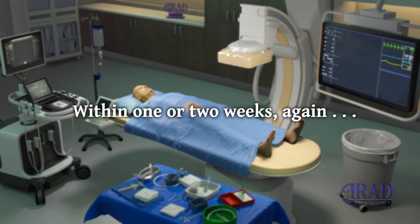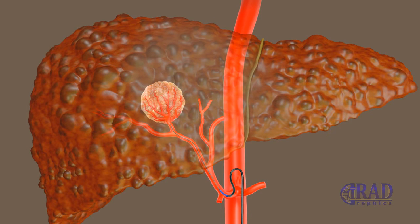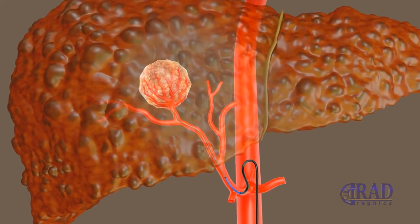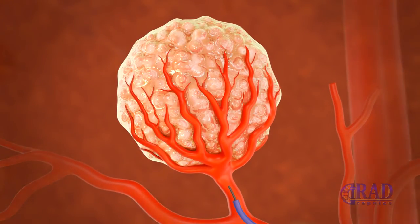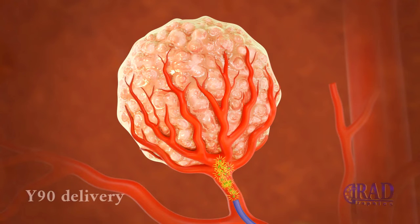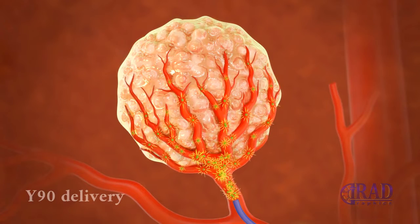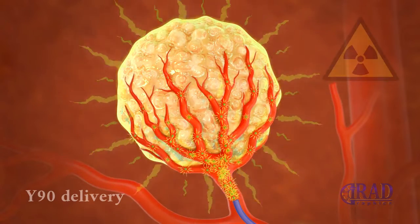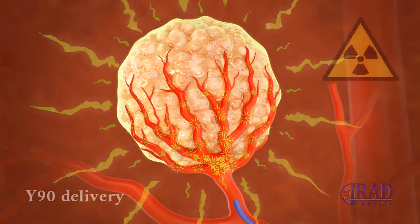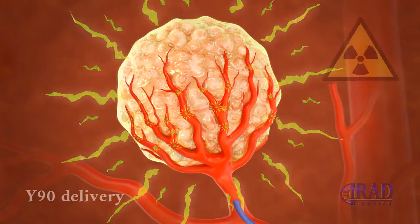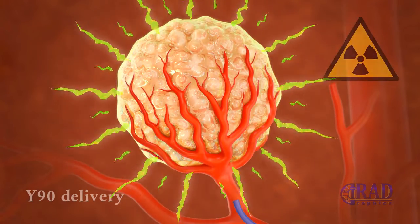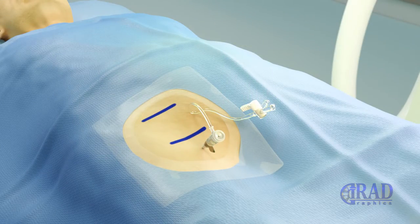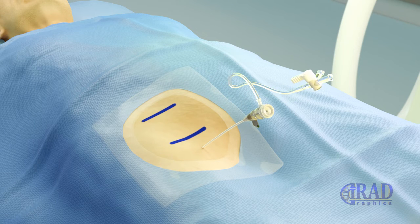Upon the patient's return for radioembolization, access for catheterization is established at the groin or wrist, mirroring the method used in the initial procedure. Subsequently, the microcatheter is used to select the same vessels supplying the tumor. After confirming the correct positioning of the microcatheter, the specified and pre-ordered dose of radioactive particles, specifically Y90, is administered into the target vessels and the tumor, ensuring the entire contents of the vials are injected. Subsequently, the microcatheter and catheter are carefully removed to prevent contamination of the patient, operators, and the work area.